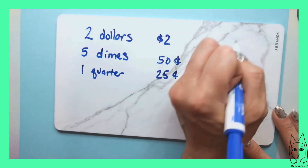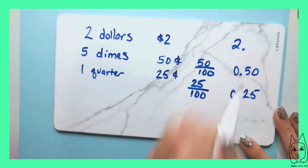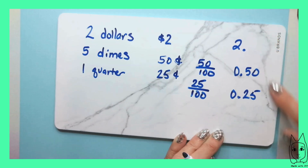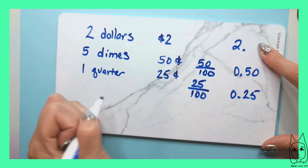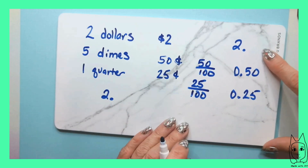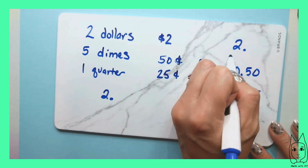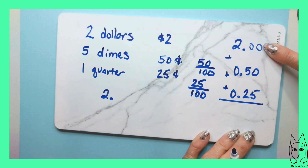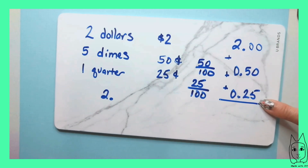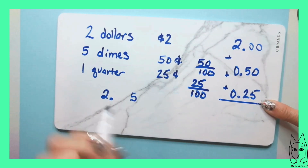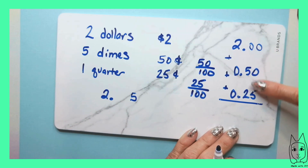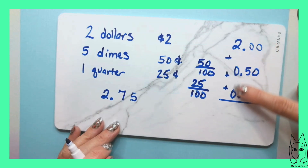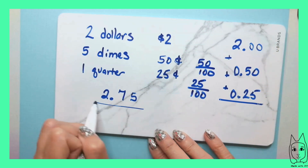Two dollars is our whole, so really there's a decimal behind that two — you just didn't know about it until now. Now we're going to add all these up together. I'm going to line these up like we did when we talked about place value in third grade. We have zero hundredths, zero hundredths, five hundredths — write down the five. Then zero-tenths, five-tenths, two-tenths — that's seven-tenths. And our whole number is two. So two dollars and seventy-five cents.